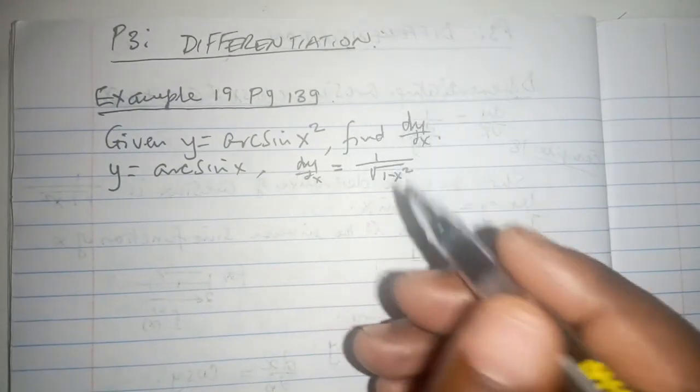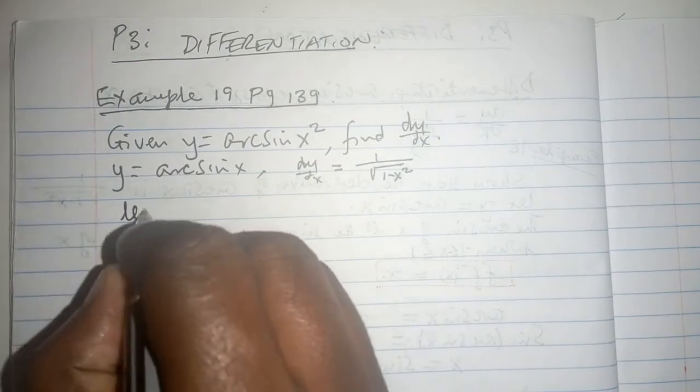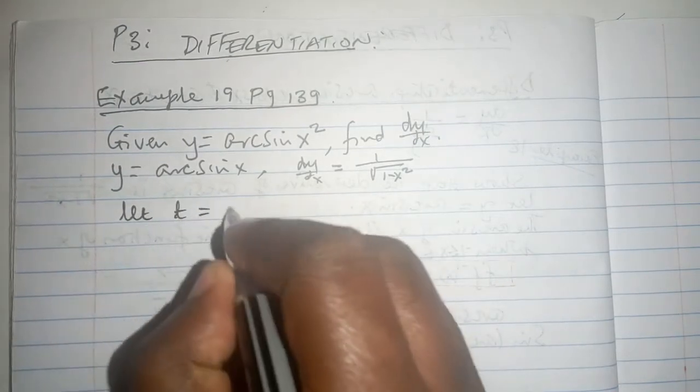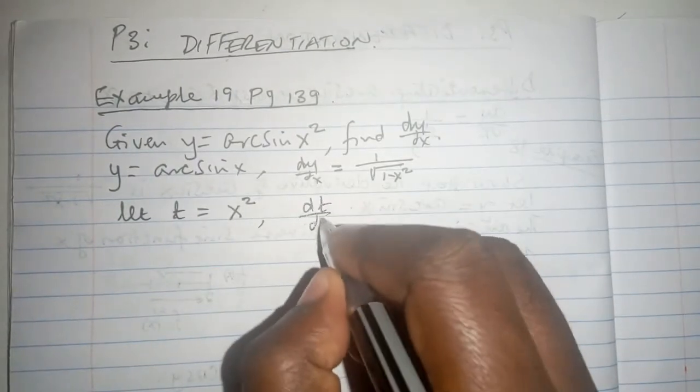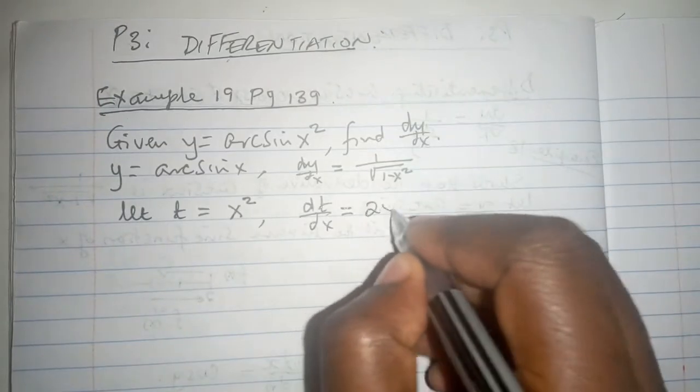So let t be equals to x squared, and if this is true, dt/dx is going to be 2x.